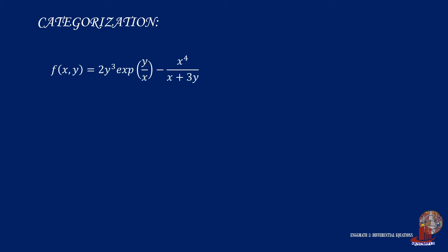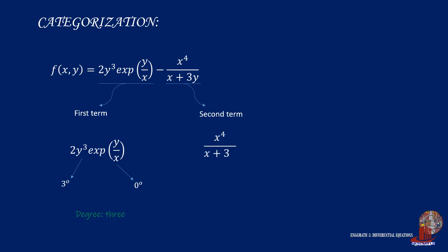For the function f(x, y) = 2y³ · e^(y/x) minus x⁴ all over (x + 3y): this equation has two terms. Checking the first term, 2y³ · e^(y/x) — y³ is of the third degree, and e^(y/x) is taken as degree 0, so the first term has degree 3. The second term, x⁴ over (x + 3y), has degree 4 on top and degree 1 in the denominator, resulting in degree 3. Having both terms in the third degree, the function is homogeneous.